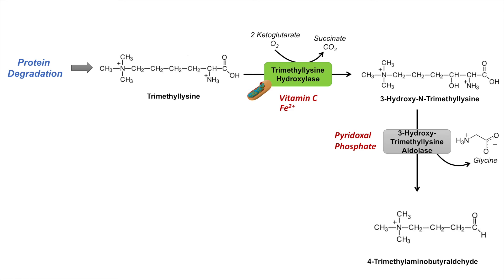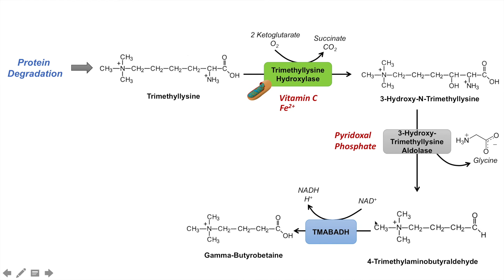4-trimethylaminobutyraldehyde is then acted on by trimethylaminobutyraldehyde dehydrogenase, or TMABADH. This enzyme utilizes NAD+ as a cofactor, reducing NAD+ to NADH and also yielding a hydrogen ion.